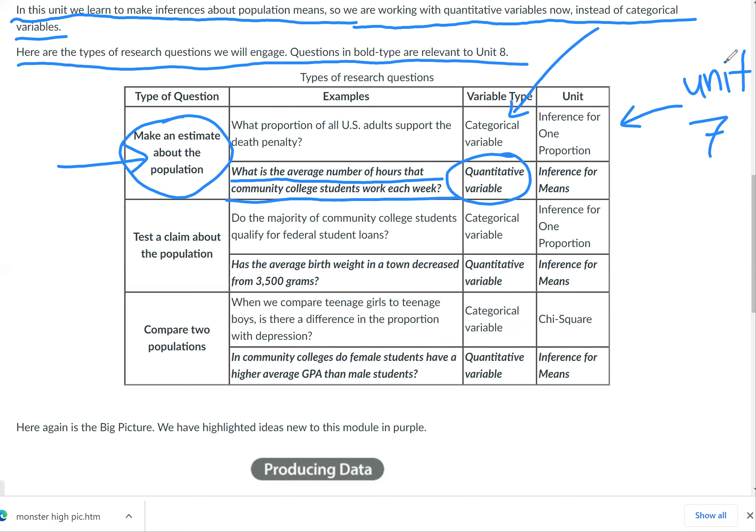We'll also test a claim about the population, just like we did before. But this time we have quantitative variables, so instead of using inference for one proportion like we did before, we use inference for means. Because again, this is quantitative variables. An example of testing a claim about a population in which the variable is quantitative would be something like: has the average birth weight in a town decreased from 3,500 grams?